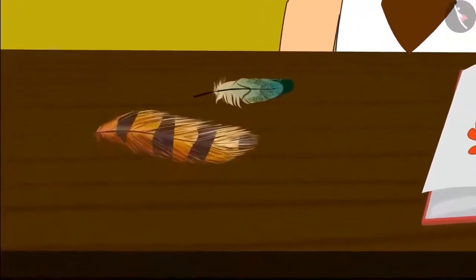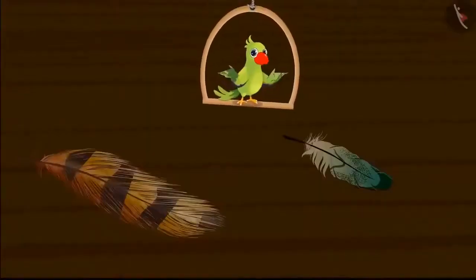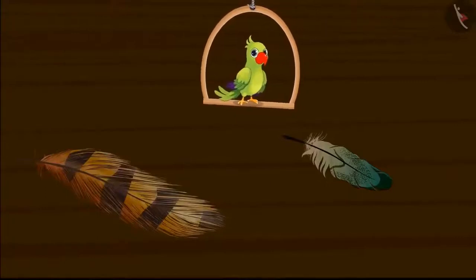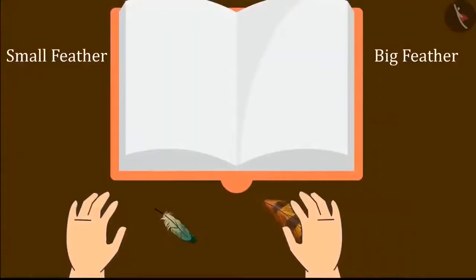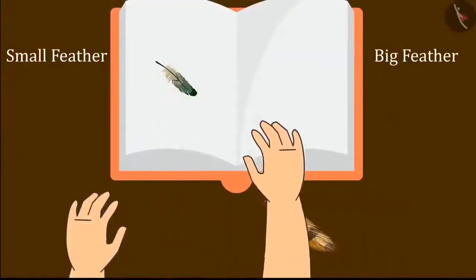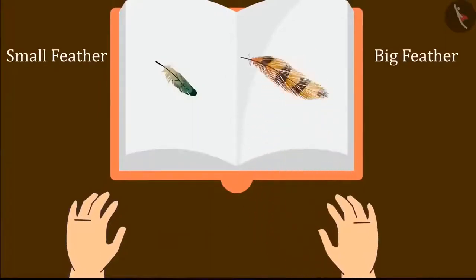Now it is the turn of the bird's feathers. Here are the two feathers of the bird. So hey kids, can you tell which one of these feathers is shorter? You thought right, kids — this is the small feather. I will paste the small feather here, and now I will paste this big feather here.